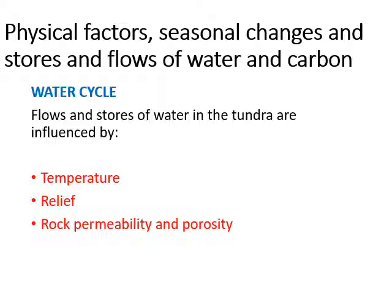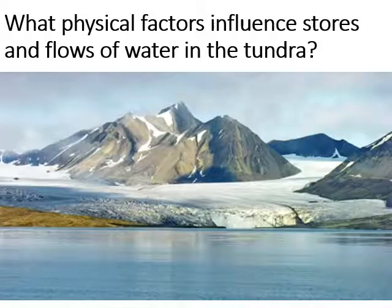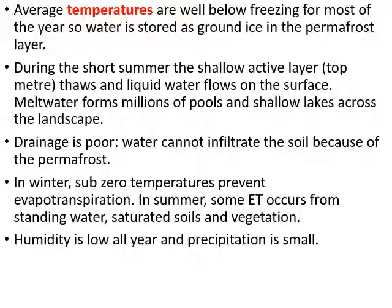We need to look at the physical factors and the seasonal changes that influence the stores and flows of water and carbon in the tundra. In terms of physical factors, we need to discuss temperature, relief, and rock permeability and porosity. Regarding temperature: it is well below freezing for most of the year, so water is stored as ice within the ground as permafrost. During the very short summer season, the very top active layer — the top metre of soil — thaws out and liquid water is found on the surface, because it cannot infiltrate through the frozen impermeable ground.